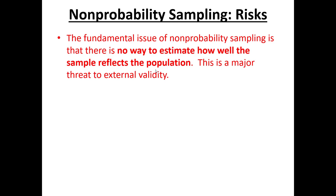The biggest risk with any non-probability sampling technique is simply that we have absolutely no way of knowing how well the results we observe in our sample generalize to the overall population. And of course, this is a major threat to external validity. We never study a sample because we care about the sample per se; rather, we study a sample because we intend to generalize those results to a broader population. So if non-probability sampling means we can't be sure how well the sample reflects the population, we've completely undermined our study.